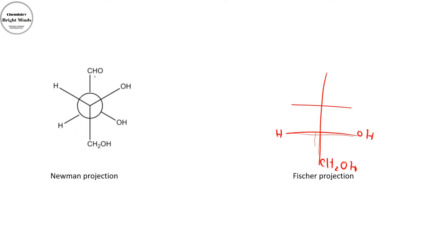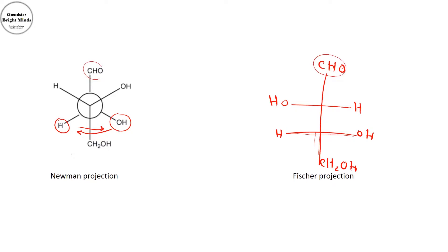For the back groups, I put the aldehyde at the top as it is. For the two side groups — the hydroxyl and the hydrogen — you need to flip them. So I put the hydrogen on the right instead of the left, and the hydroxyl on the left instead of the right. The easy method: draw the Y-shape in your Fischer projection, place the back group at the top as-is, and flip the two bottom groups between them. Now I have my Fischer projection.